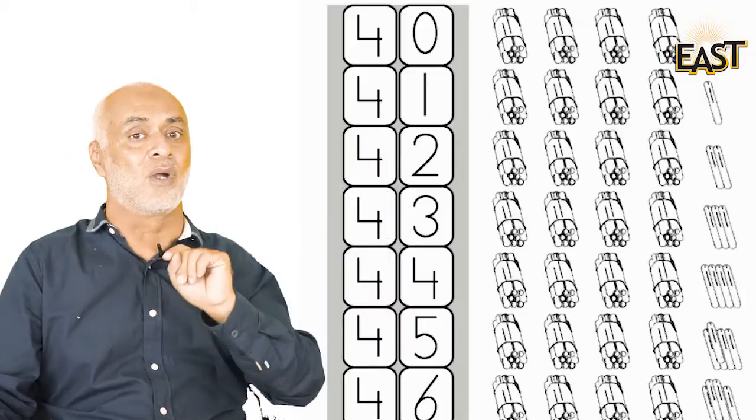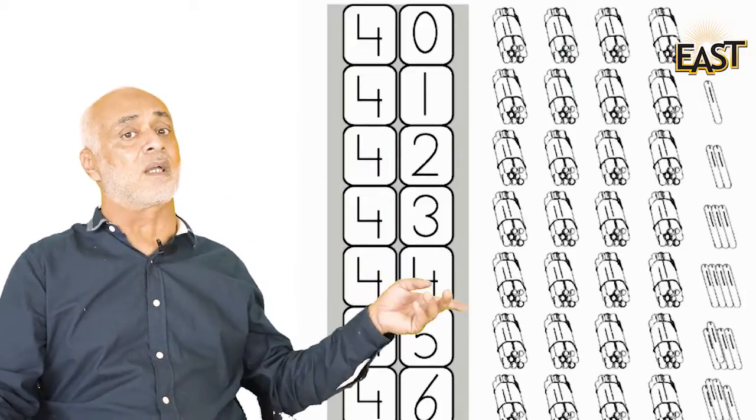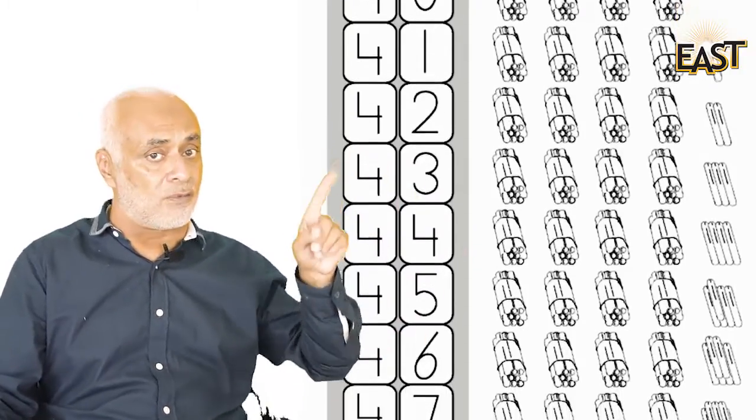So forty-three, four we write under the ten and three we write under the unit. And in this way, after this comes forty-four, forty-five, forty-six, forty-seven, forty-eight, and forty-nine. Very good.